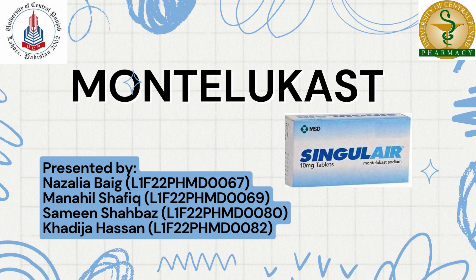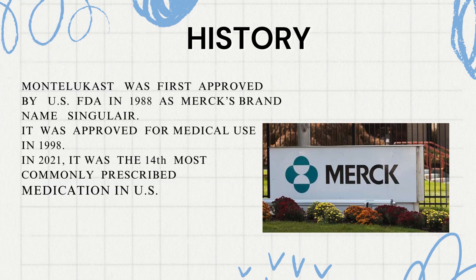Our topic is the anti-asthmatic drug Montelukast. Montelukast was first approved in 1988 by the United States FDA under Merck's brand name Singulair. However, it was first approved for medical use in 1998. In 2021, it was the 14th most commonly prescribed medication in the U.S.